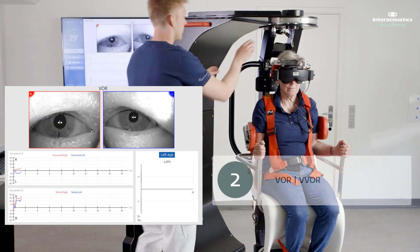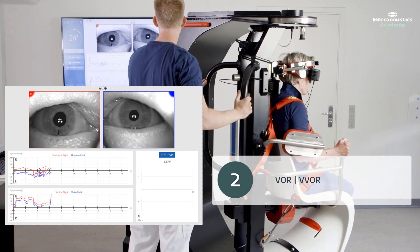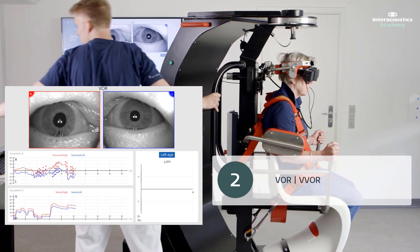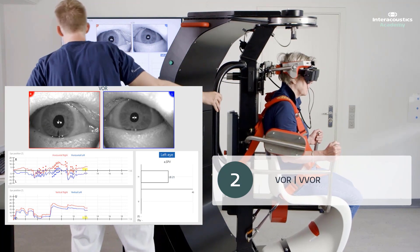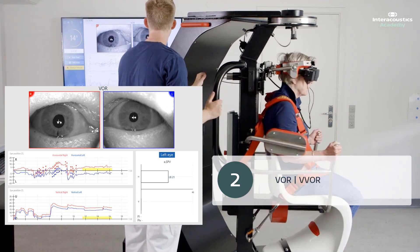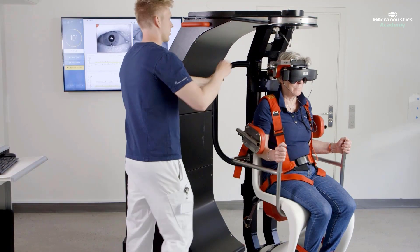As shown and described in the diagnostics section, the patient is moved quickly with short rotations to either side in the yaw axis to examine the horizontal VOR function. Please note that the previous bilateral rotationally induced nystagmus is nicely suppressed during the rotations to either side with fixation.